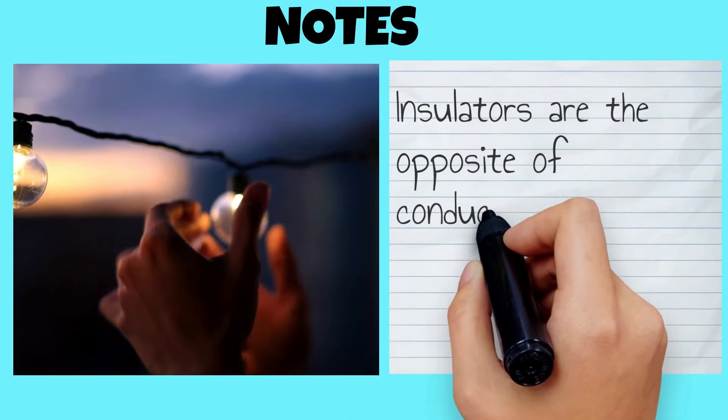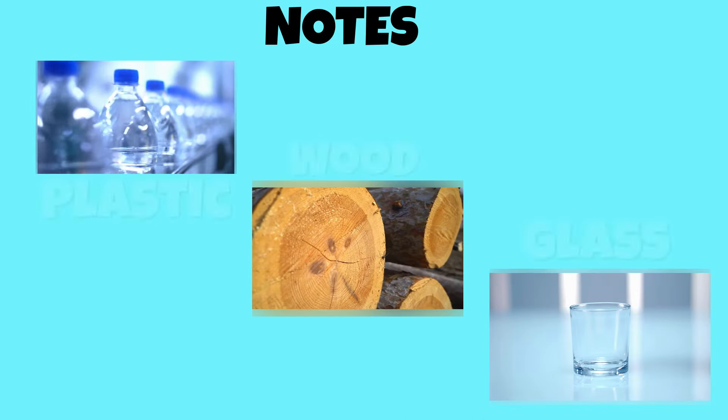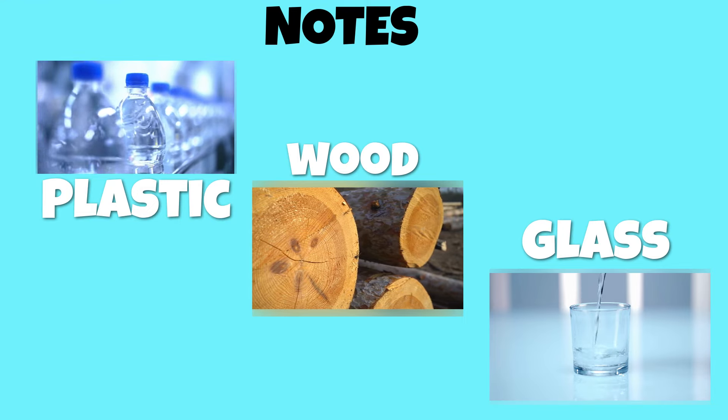Insulators are the opposite of conductors because they resist the flow of electricity or heat. Examples of insulators are plastic, wood, and glass.